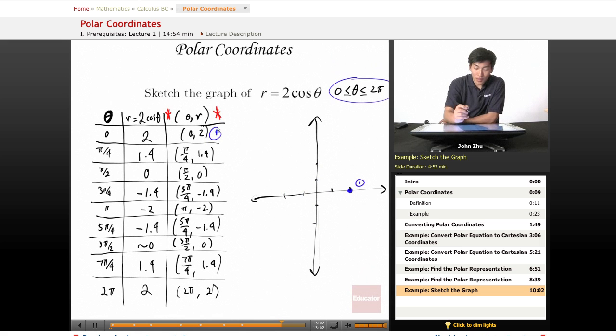Moving along, we have our second point, π/4. So π/4 is here, and the r value is 1.4, somewhere along here. And moving along, (π/2, 0). So π/2, 0 is the origin. Anytime r equals 0, you get a point in the origin. So we have these three points plotted.